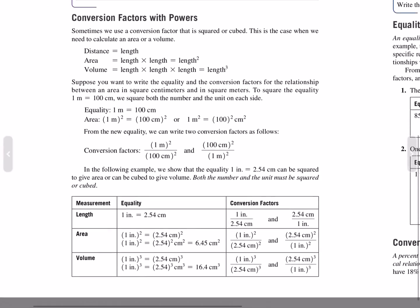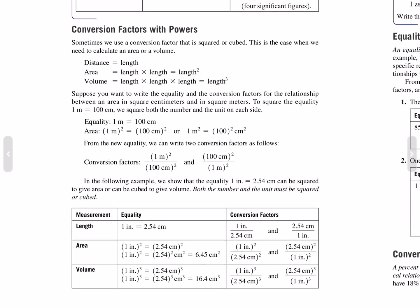Conversion factors with powers. Sometimes we use a conversion factor that is squared or cubed, which is the case when calculating area or volume. Distance equals length; area equals length times length, or length squared; volume equals length times length times length, or length cubed. Suppose you want to write the equality and conversion factor for a relationship between square centimeters and square meters.